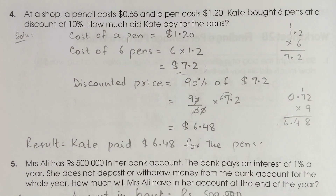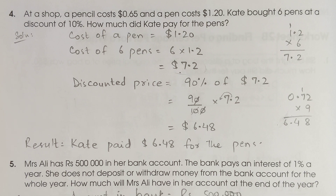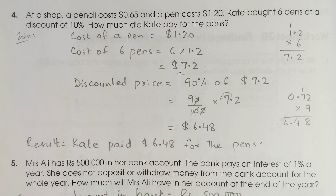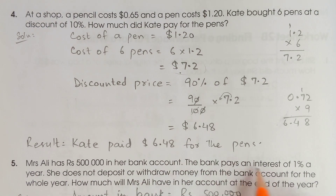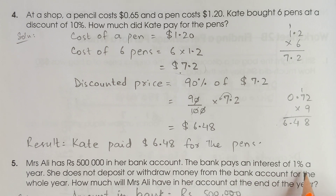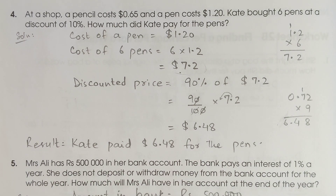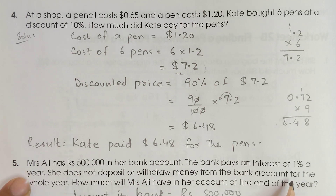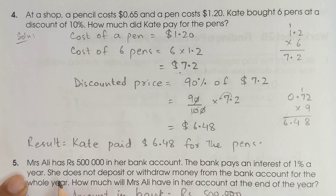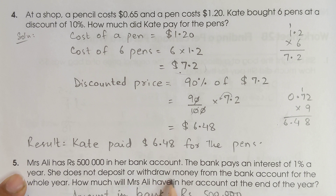Next, question number 5. Mrs. Ali has 500,000 rupees — that is 5 lakh — in her bank account. The bank pays an interest of 1% per year. She does not deposit or withdraw money from the bank account for the whole year.